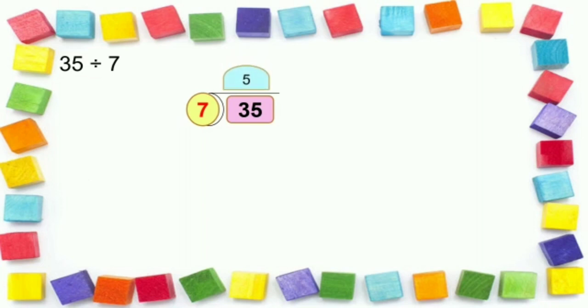So we write 5 above the horizontal line. Now the next step is to subtract the product from the dividend. So we subtract 35 from the dividend. And our last step is to subtraction. When we subtract 35 from 35, we get 0.